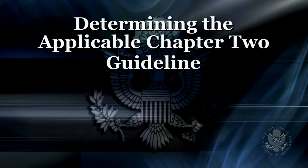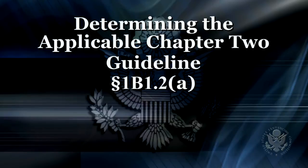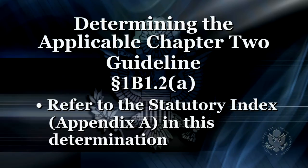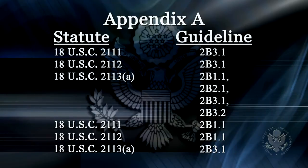Once the court determines the appropriate guideline manual, the next step is to determine the appropriate Chapter 2 guideline for the defendant's instant offense of conviction. Guideline 1B1.2(a) states that the Chapter 2 guideline applicable to the offense of conviction determines the appropriate Chapter 2 offense guideline. To assist the court in this determination, the manual provides a statutory index found in Appendix A. This graphic provides an example of a listing at Appendix A — in the left column you see a list of statutes of conviction, and on the right you see the Chapter 2 guideline corresponding to the offense of conviction. For the majority of the statutes listed, there is one guideline corresponding to a particular statute of conviction.